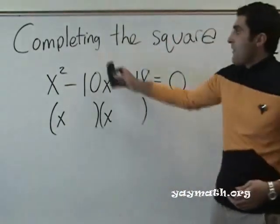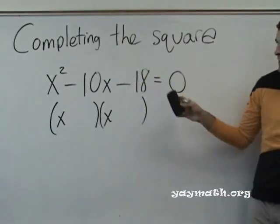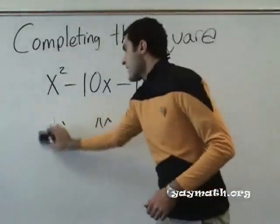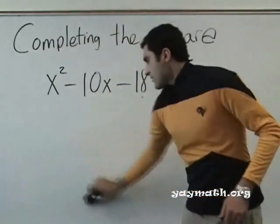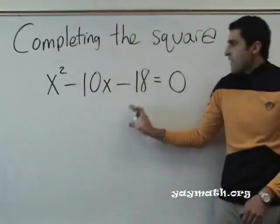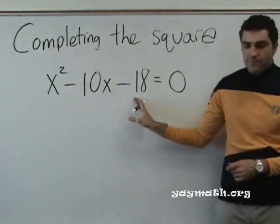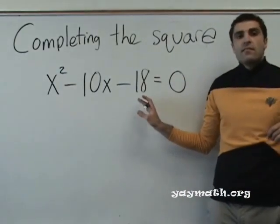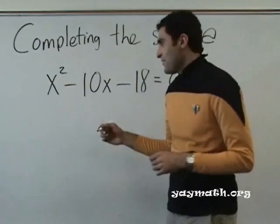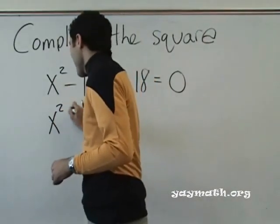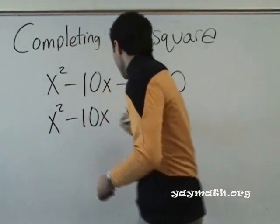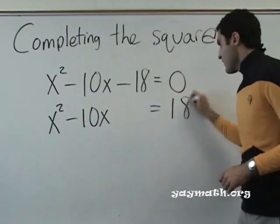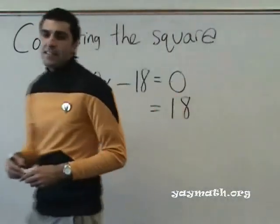So we have to have a new way to solve this. And the method is called completing the square. Here's how it works. First of all, this number needs to be moved to the other side. The last number. The C, if you will. Yes? You add 18 to both sides. You add 18 to both sides. Thank you. x squared minus 10x equals 18. Bless you. We added 18 to both sides.